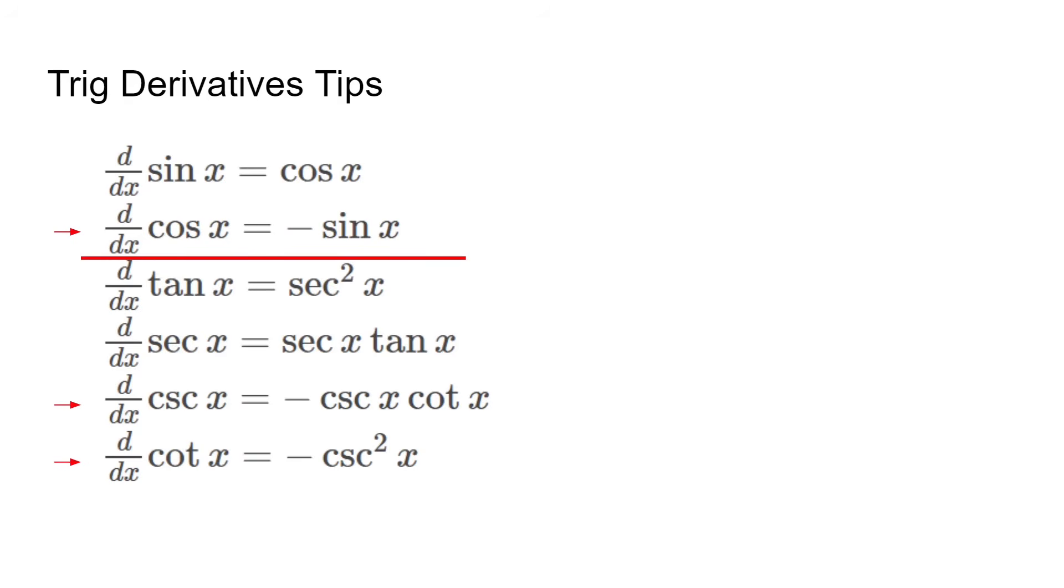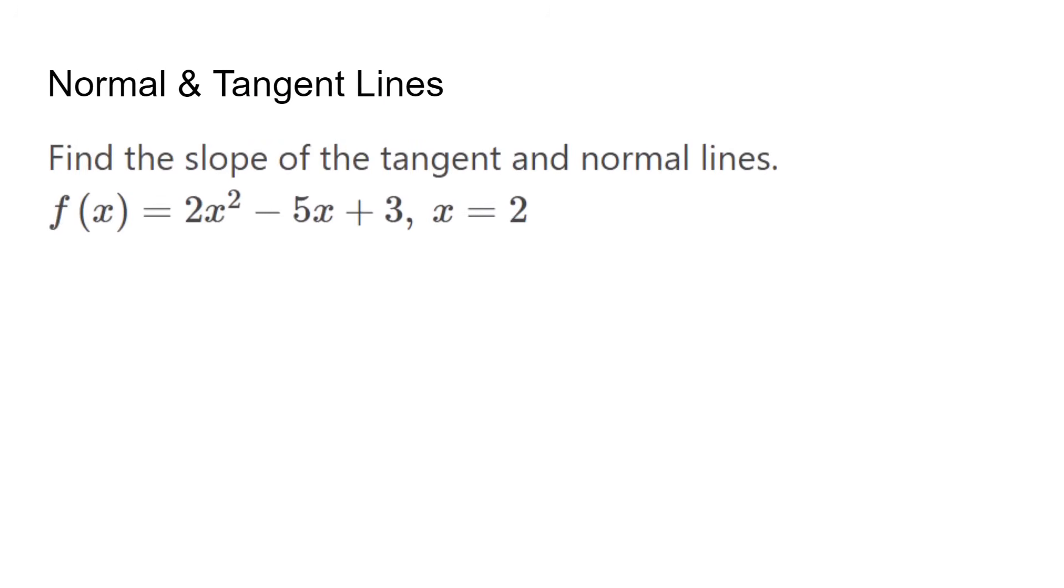Now that we know these basic rules, a frequent question will be finding the equation of a tangent line, or a normal line. If you remember from the first slide, the tangent line is the line that touches a curve at one point. It is the derivative at the point as well. Knowing this, we can use the point-slope formula for a line.